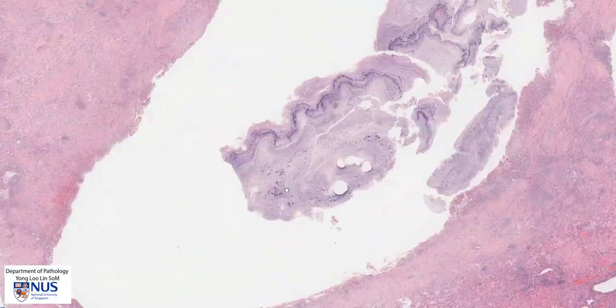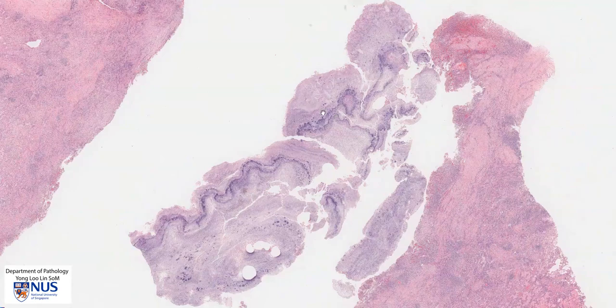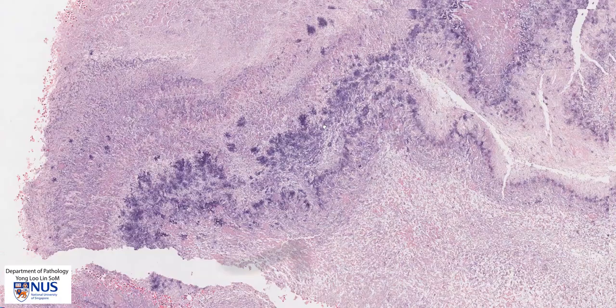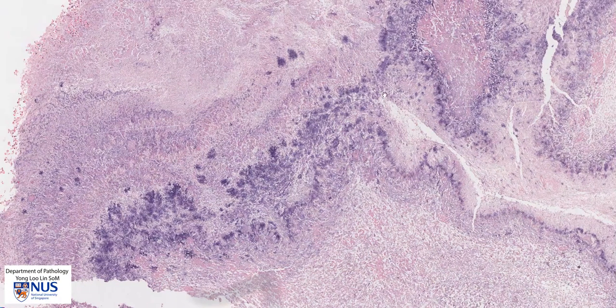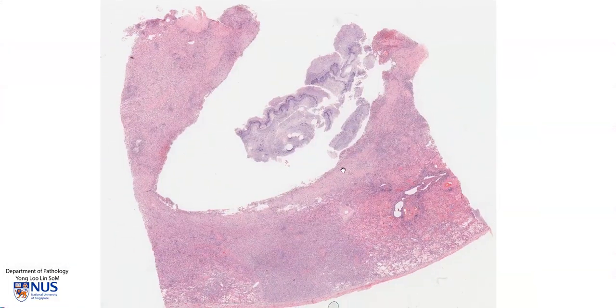Moving back to the area of the abscess, we see that it's mostly an empty cavity where the contents have fallen out. But zooming in, we can actually see that there are lots and lots of bacterial organisms forming clumps within the abscess itself. It really depends on the timeline or the age of the abscess. Sometimes abscesses that have been around for a while may actually have a rim of fibroblasts or fibrous tissue around them.